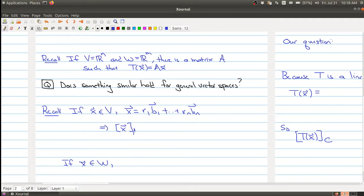And then this means that the b-coordinate of x is the vector [r1, ..., rn]. Similarly, if you take x in W, any vector in W, you can write it as s1 times the first basis element all the way up to sm times the last basis element.